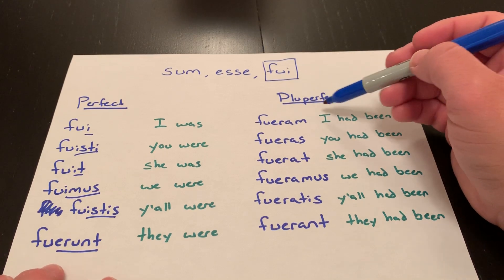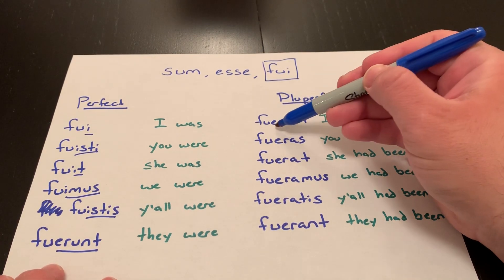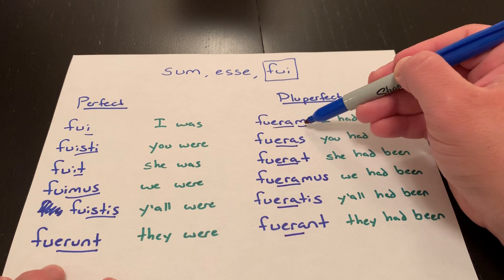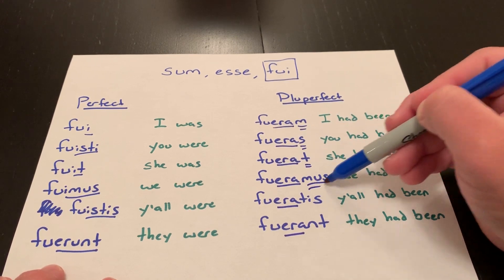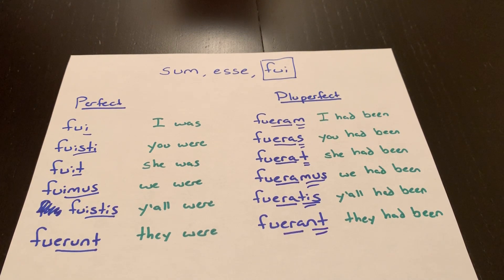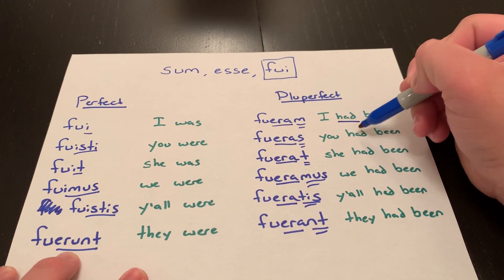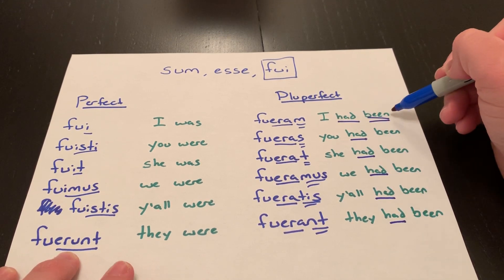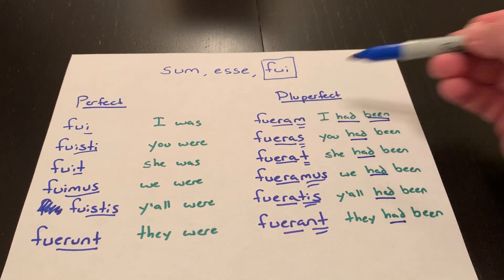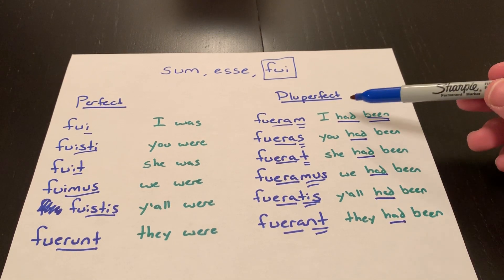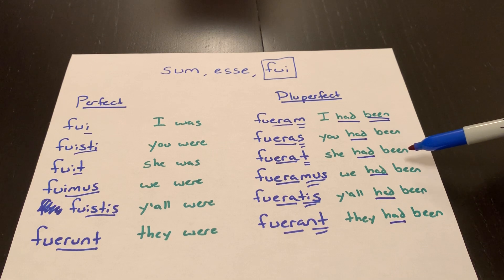Same thing with the pluperfect. Third principal part minus the I, plus ERAM endings: M, S, T, MUS, TIS, NT. You get: FUERAM, FUERAS, FUERAT, FUERAMUS, FUERATIS, FUERANT. You need the keyword 'had' to show the pluperfect, and you also need the verb 'to be.' FUERAM doesn't mean 'I had' — you have to include 'to be,' which takes the form 'been.' So: I had been, you had been, she had been, we had been, y'all had been, they had been.